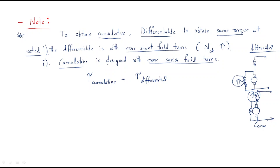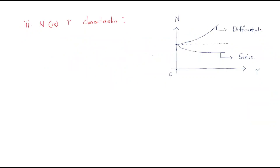This is a very important condition. For a compound motor, the differential compound motor torque and cumulative compound motor torque at a particular rated current will be different. But to maintain the same torque: the cumulative compound motor should have more series field turns, and the differential compound motor should have more shunt field turns.